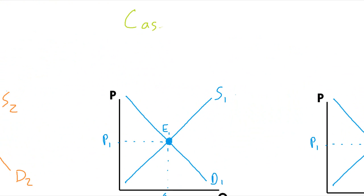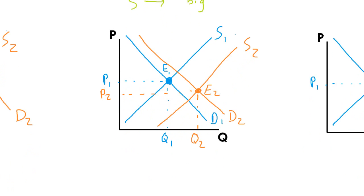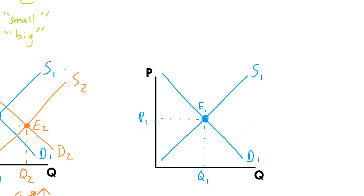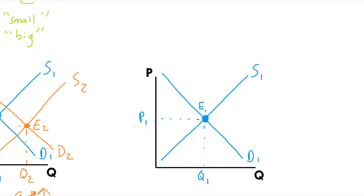Now on the second graph in case two, we're going to draw a small demand shift and a relatively big supply shift. So we draw the graph and we get a slightly different result. In this case, P star decreased and Q star increased. So we've seen that the price could go up or down depending on the relative sizes of these demand and supply shifts.